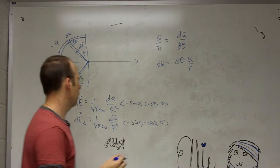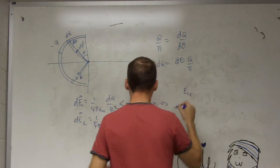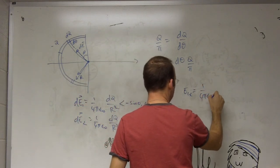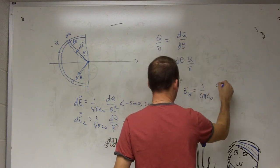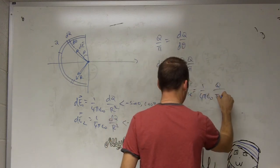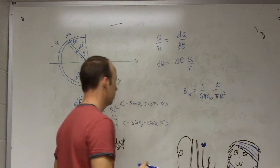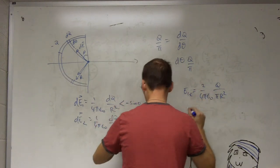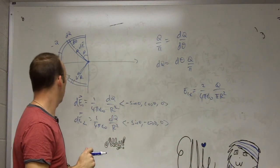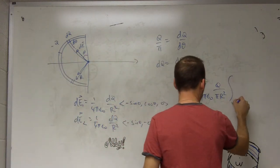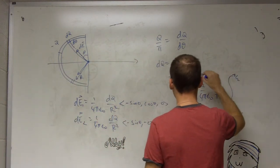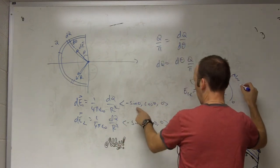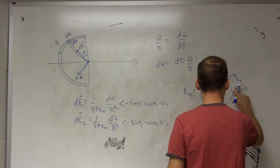So now I have an integral here. Now I can say E1X. I only have the X component that survives. 1 over 4 pi epsilon naught. The Q comes out. Q, the r squared comes out, pi, r squared. All I have left is, and there's a two, because I have two of those. All I have left is the integral from zero to pi over two.